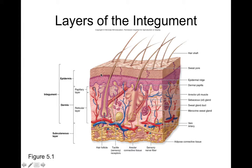The stratum basale contains stem cells like dividing keratinocytes. It also has melanocytes that produce the pigmented molecule melanin, which gets incorporated into the growing keratinocytes. That way your skin gets a pigment that helps to protect against UV radiation.